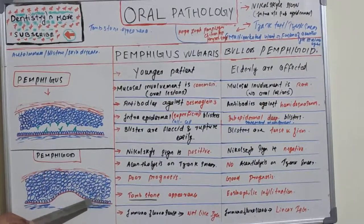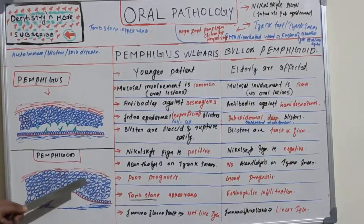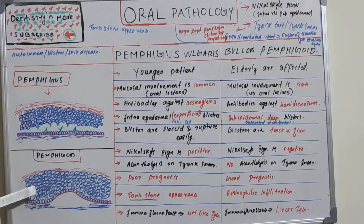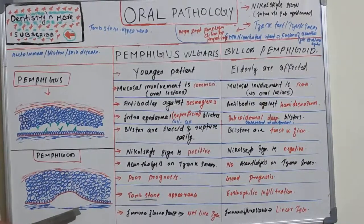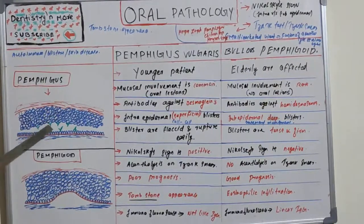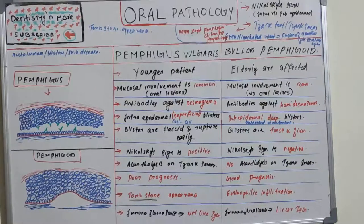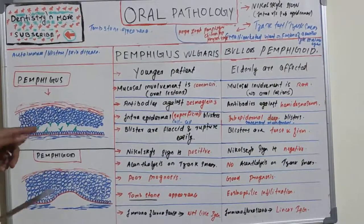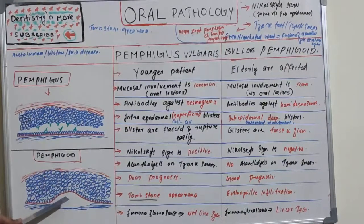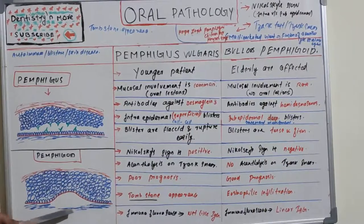But in pemphigoid, the epithelium itself is not affected. The basal layer and all other layers are present without much problem within the epidermis. The problem is between the epidermis and the basement membrane. So it is sub-epidermal blister formation — that is the unique difference between these two conditions.